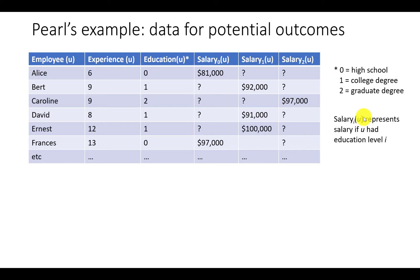The only salary i we actually know is the one where i is the actual level of education. Alice has education level 0 so her actual salary is in this column corresponding to the zero level of education. Bert had education level 1 so his actual salary is in this column where we've got the employees who had education level 1.